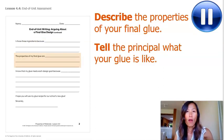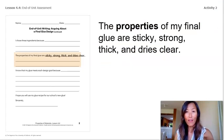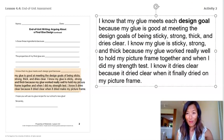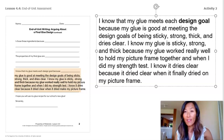Describe the properties of your final glue — tell the principal what your glue is like. Pause the video and write what your final glue is like. I wrote: the properties of my final glue are sticky, strong, thick, and dries clear. Now, let's use evidence to show that your glue meets each design goal. Remember, we got evidence by observing, reading, and testing. Pause the video and write down what evidence your glue meets for each design goal. Here's what I wrote: I know my glue meets each design goal because it is sticky, strong, thick, and dries clear. I know my glue is sticky, strong, and thick because my glue worked really well to hold my picture frame together and when I did my strength test. I know it dries clear because it dried clear when it finally dried on my picture frame.